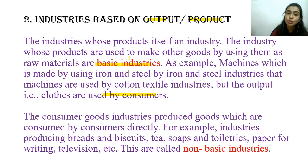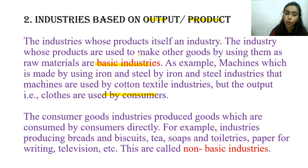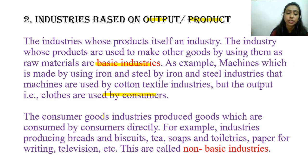So basic industries are those whose output is used as raw material to make other industries' products. The example is iron ore — the iron and steel industry is a basic industry because its output is used as raw material by other industries.